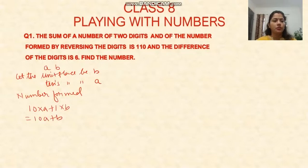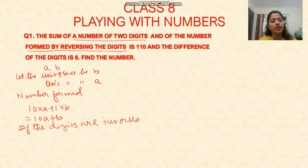Sum of the two-digit number and the number formed by reversing the digits. If the digits are reversed, a goes to the units place and b goes to the tens place. Then our new number will be 10b plus a.